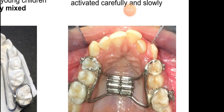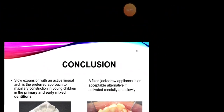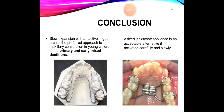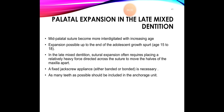In conclusion for pre-adolescent children: slow expansion with an active lingual arch is the preferred approach to maxillary constriction in young children in the primary and early mixed dentition. When jack screw appliances are used, they must be activated very carefully. Moving to palatal expansion in the late mixed dentition: the mid-palatal suture becomes more interdigitated, and heavier forces are needed to break it. That heavy force can be provided by a jack screw appliance, not by lingual appliances like the W-arch or quad helix.